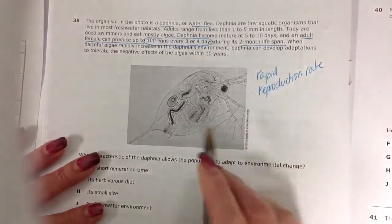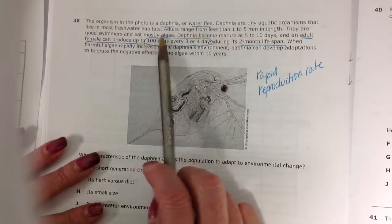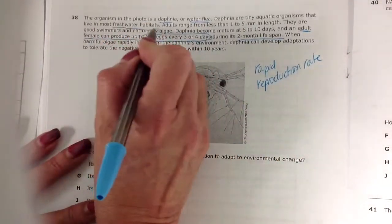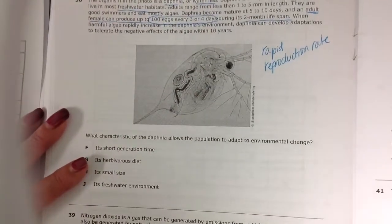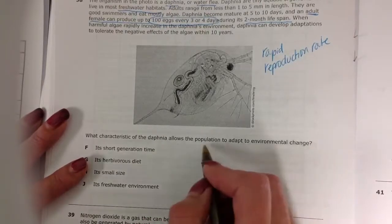So at this point, that's really all we know about these Daphnia or water fleas that live in freshwater. Well, we do know that they have freshwater habitats. So let's see what the question is. It says, what characteristic of the Daphnia allows the population to adapt to environmental change?